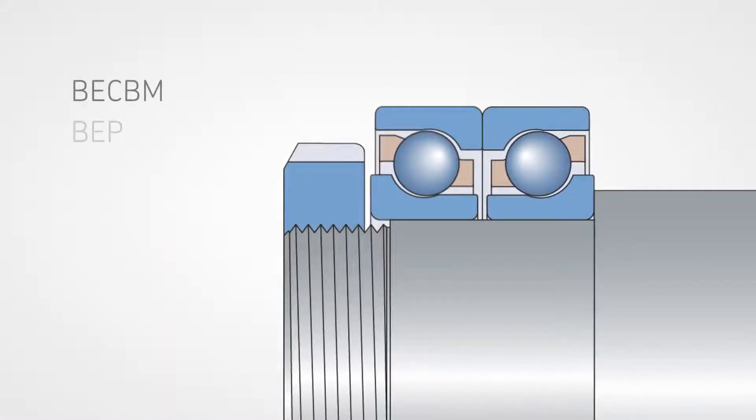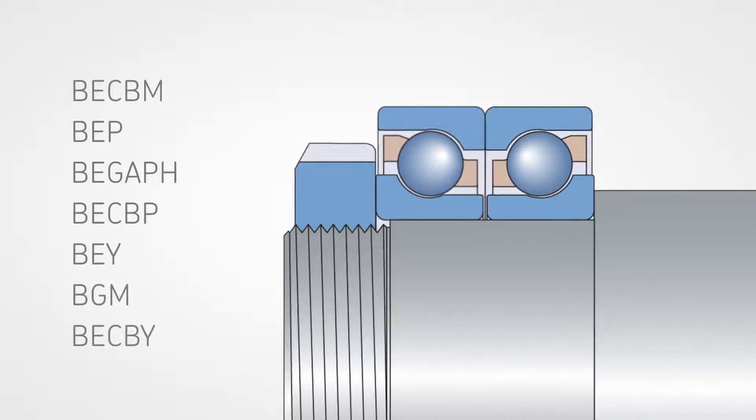SKF manufactures a complete range of pre-adjusted bearings, which when used as pairs will ensure the correct amount of clearance or pre-load is achieved. It is very important to check the application manual for the correct setup information.